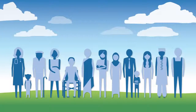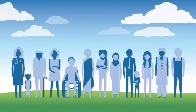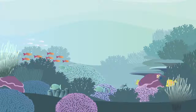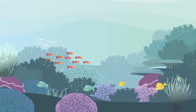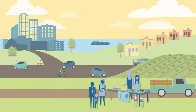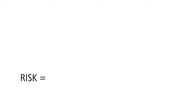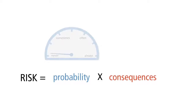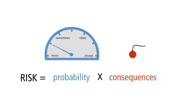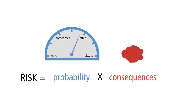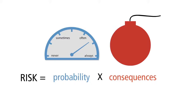Climate change poses risks for people, ecosystems, and economies. Think of risk as probability times consequences. Some risks are high because the outcome has a high probability of occurring. Other risks are high because the consequences are very severe, even if the probability is low.